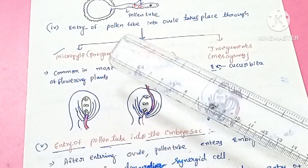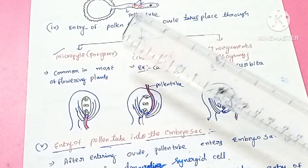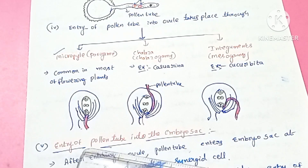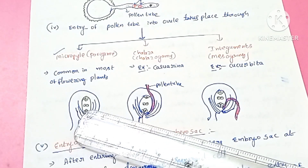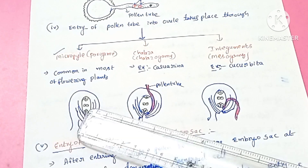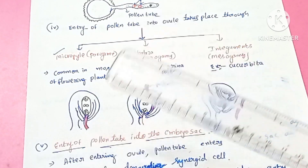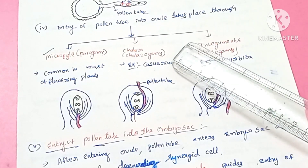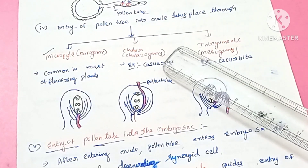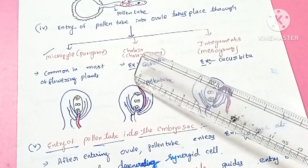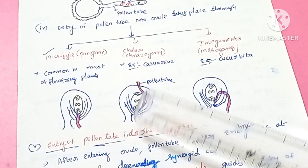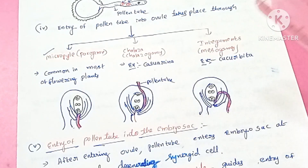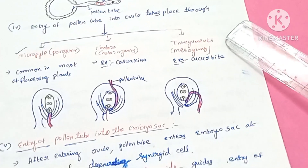In Porogamy, the pollen tube enters the ovule through the micropyle region. The micropyle region and the chalazal region are the two ends of the ovule. In most flowering plants, the pollen tube enters through the micropyle. Casuarina is an example of Chalazogamy. The integuments correspond to Mesogamy.